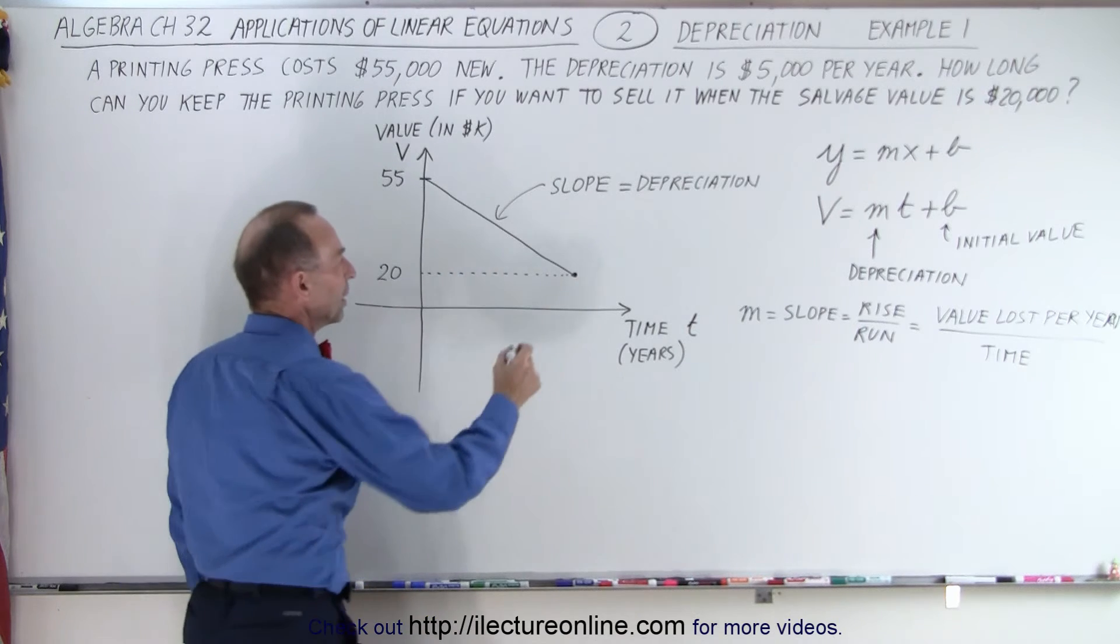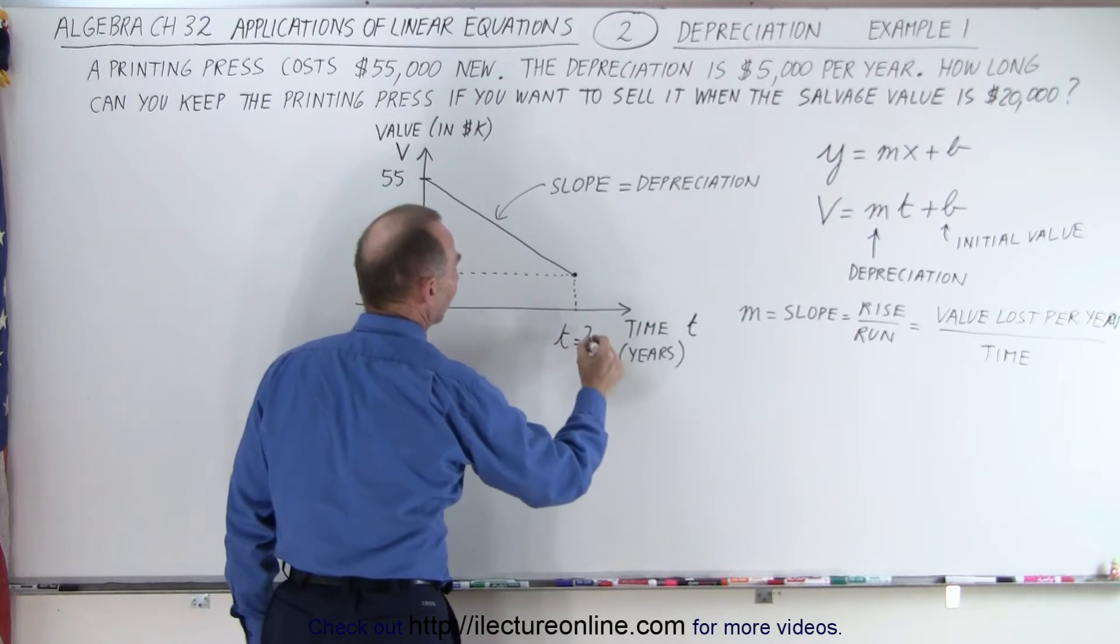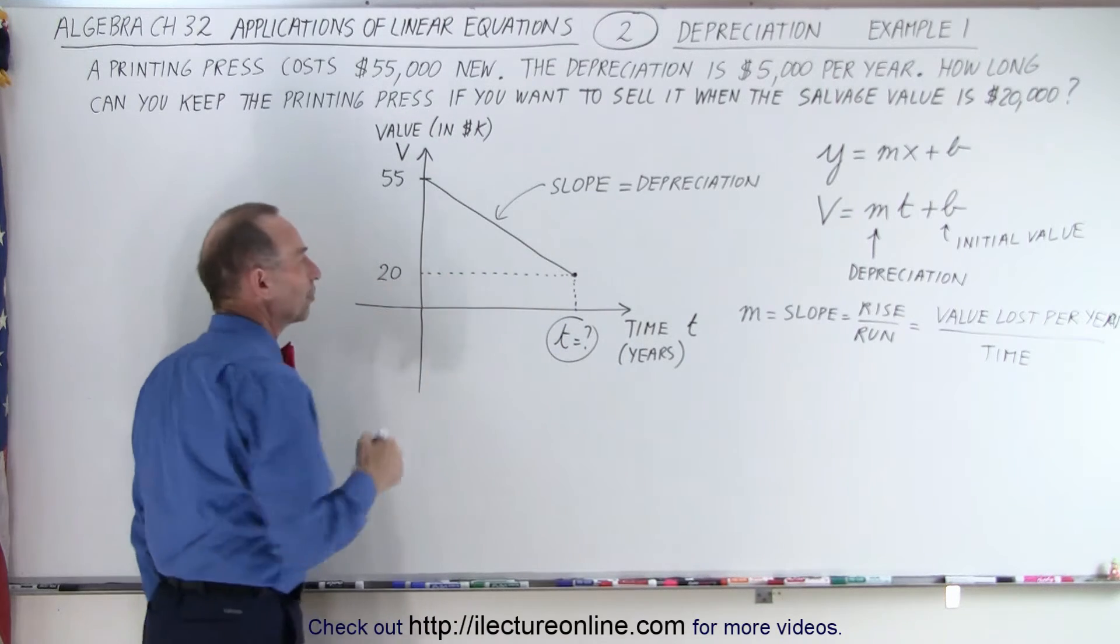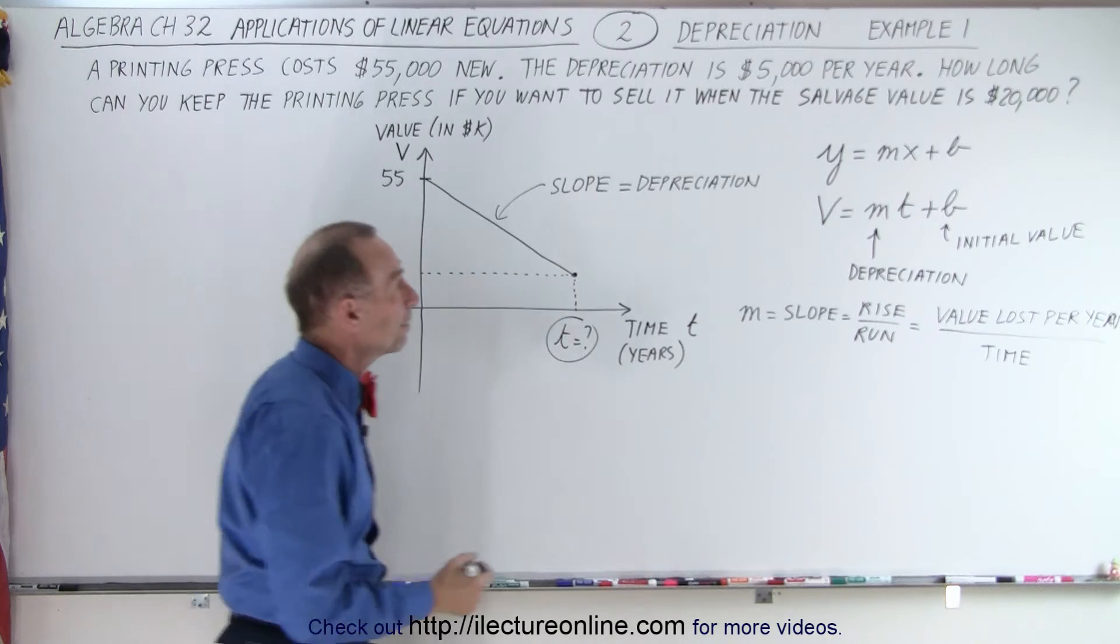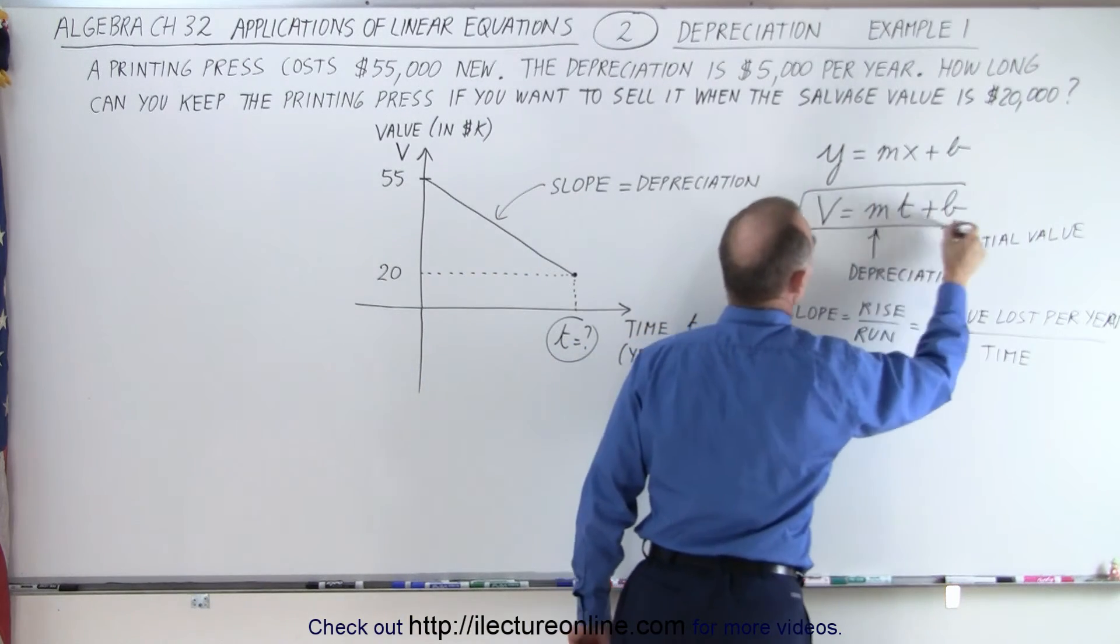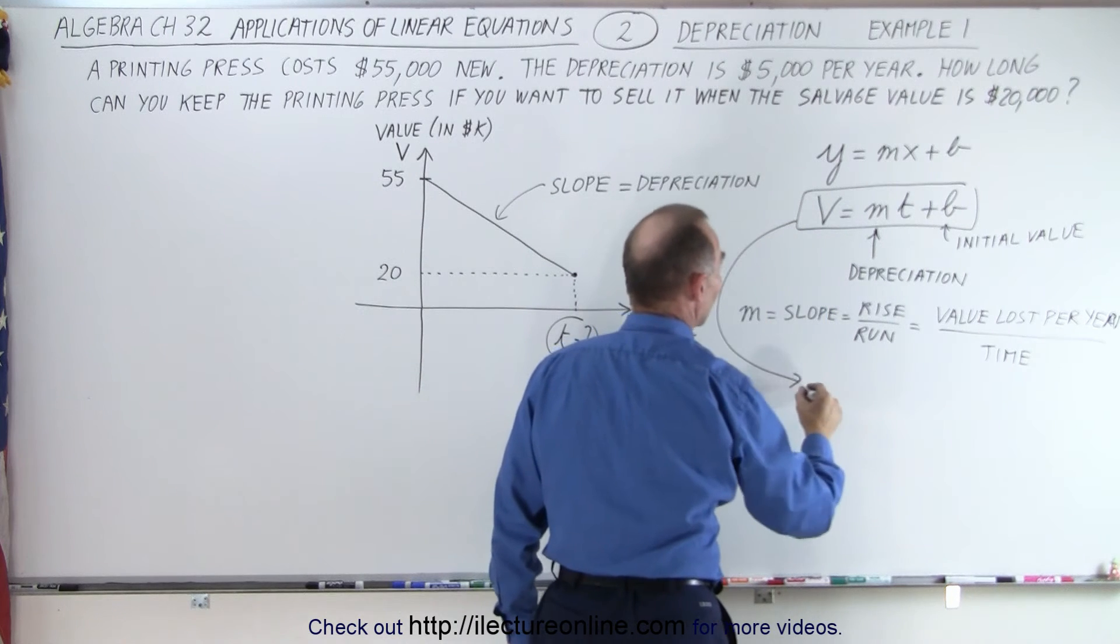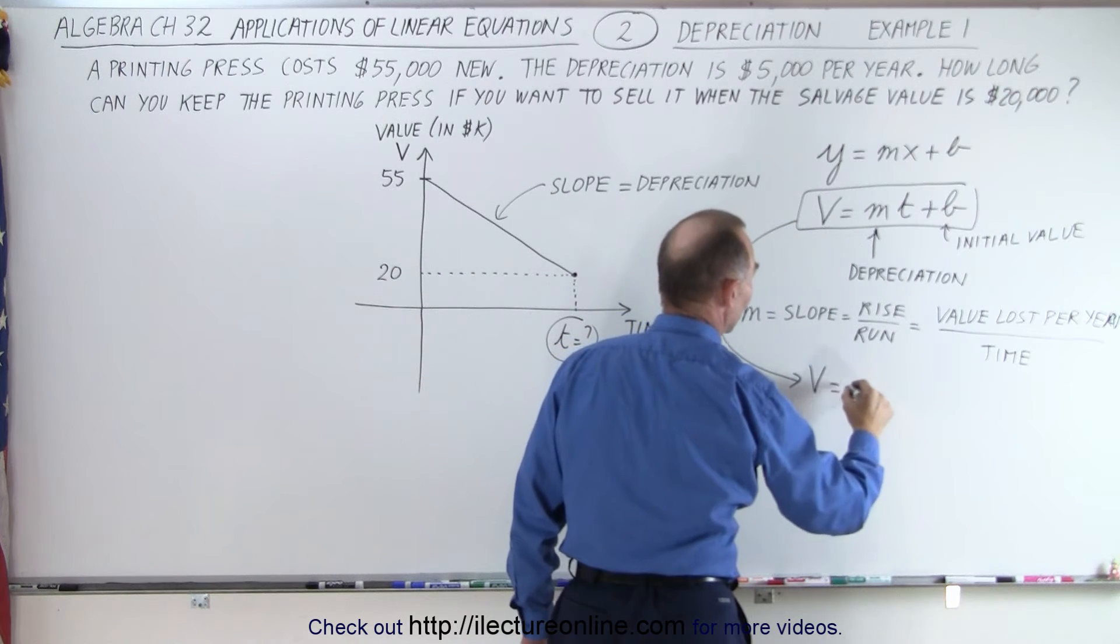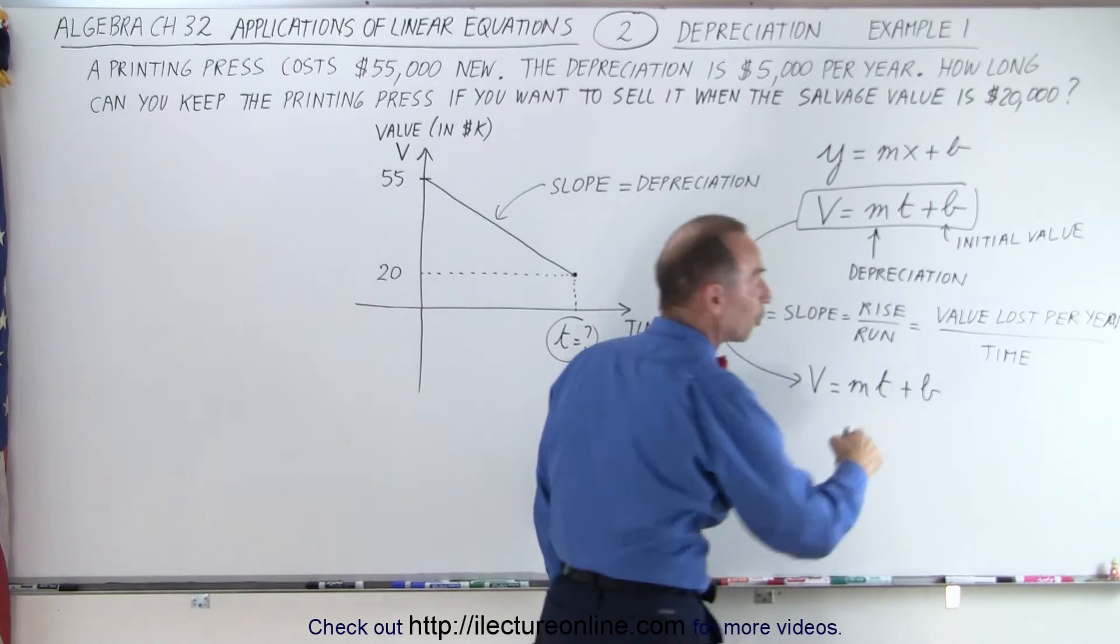Now also what I want to do is say, I want to know how much time has elapsed when the value has dropped to 20. So when the new value is 20, what will be the time? So what I can do is I can take this equation right here and solve it for t. So let's rewrite the equation. We can say that the value is equal to the slope times t plus b. And let me solve that equation for t.